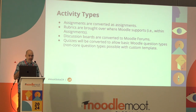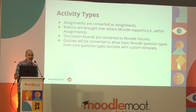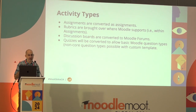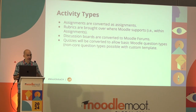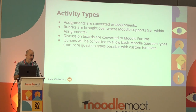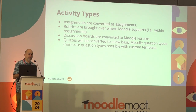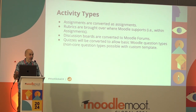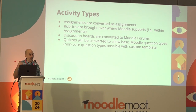Getting into specifics: activity types in the Moodle ecosystem — assignments are converted to assignments; rubrics are brought over where Moodle supports them, such as within assignments. A pitfall is that other systems support rubrics in quizzes, which Moodle doesn't. Discussion boards are converted to Moodle forums, and quizzes are converted with the default template to basic Moodle question types included in core. The ordering question type, recently brought into core, was previously in our customized template and is now also available in the default template.